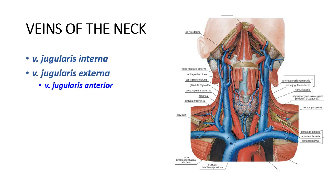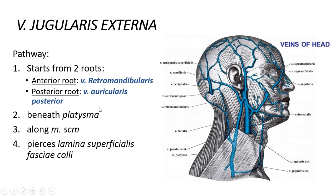This is a very important blood vessel. The second vein, the vena jugularis externa, is much smaller and receives predominantly superficial tributaries. The vena jugularis anterior is the most superficial jugular vein.